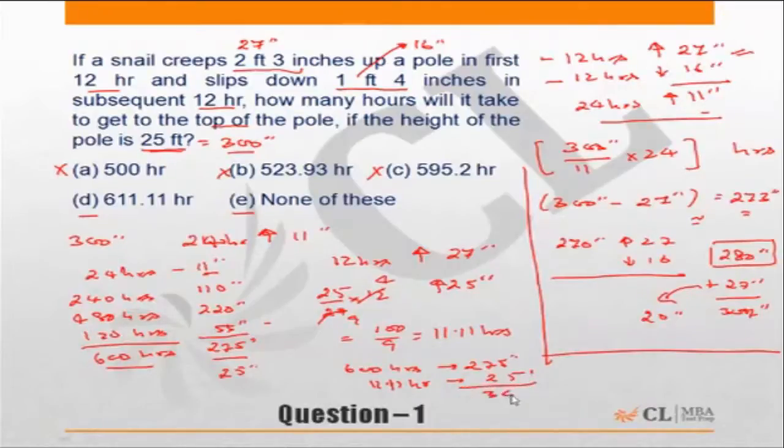So the time taken will be 600 plus 11.11, which makes it 611.11 hours. Choice D is the correct answer.